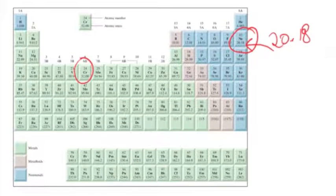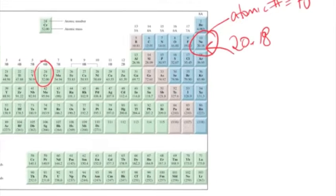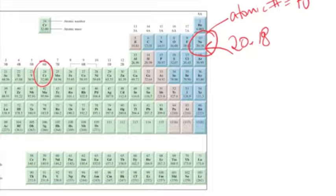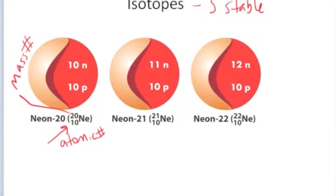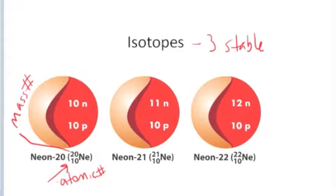You want to be very good at flipping back and forth between isotopic notation and getting information off the periodic table. The information for neon is that its atomic number is 10, the number of protons in the nucleus. The other information is the atomic mass, 20.18. But the mass number depends on which isotope you're talking about. The atomic number stays the same, but the mass number is 20, 21, or 22.